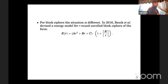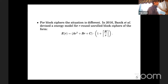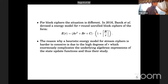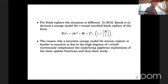For block ciphers, the situation is a little different. In 2016, Bannick devised an energy model for R-round unrolled block ciphers of a quasi-quadratic form, where R is the total number of rounds and coefficients A, B, and C encode circuit-specific details. The reason a heuristic energy model for stream ciphers is harder to conceive is due to the high degrees of the unrolling factor R, which enormously complicates the underlying algebraic expressions of the state-update functions.